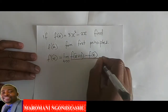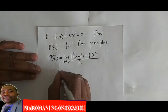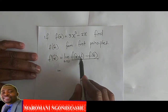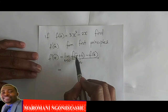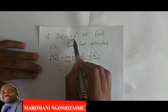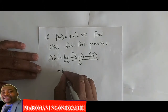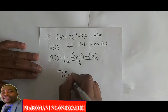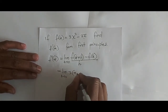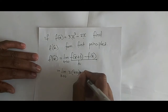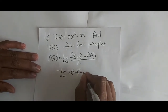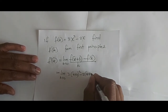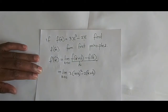This is now equal to: wherever there is x in f(x), we substitute x plus h. So it becomes the limit as h approaches 0 of 3 times (x plus h) squared minus 2 times (x plus h), because we have a second x term there.